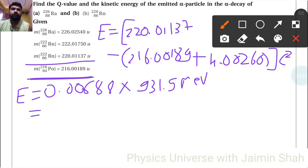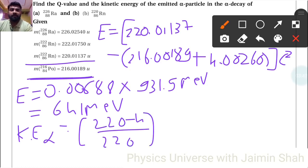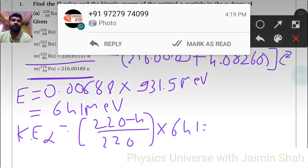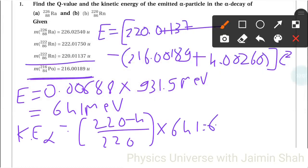Now kinetic energy of alpha equals 220 minus 4 divided by 220, times 641 MeV. This equals 6.293 MeV, which is the kinetic energy of the alpha particle.